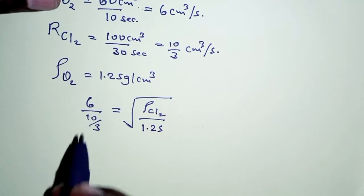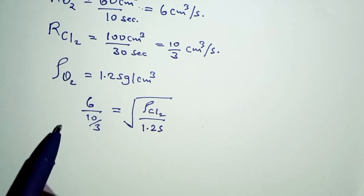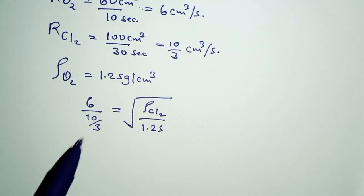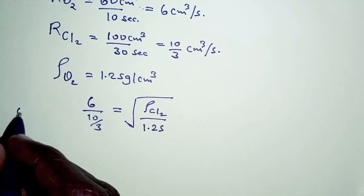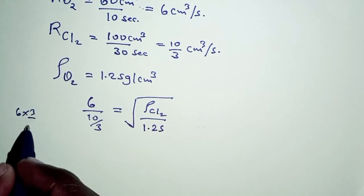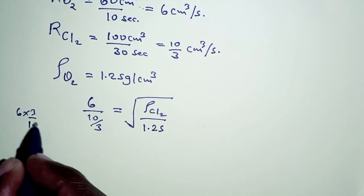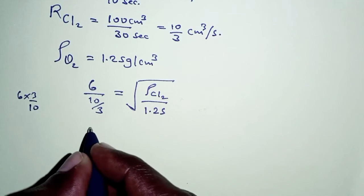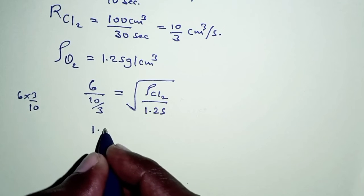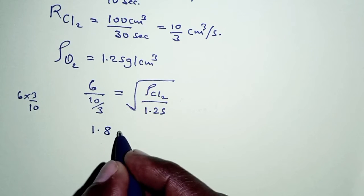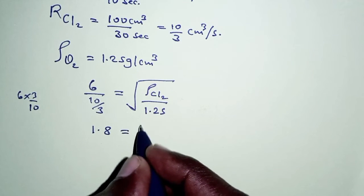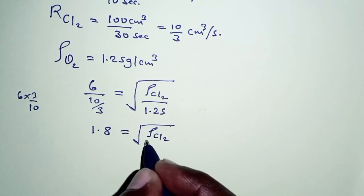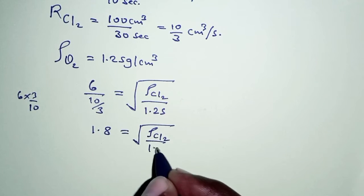Working out the left-hand side: 6 divided by 10/3 is 6 times 3 over 10, which is 18/10, that is 1.8. On the right-hand side, we have the square root of the density of chlorine gas over 1.25.